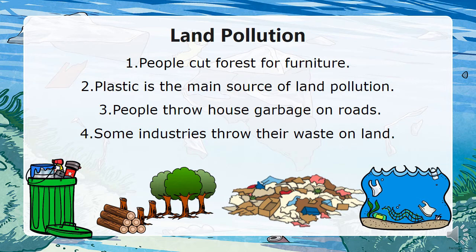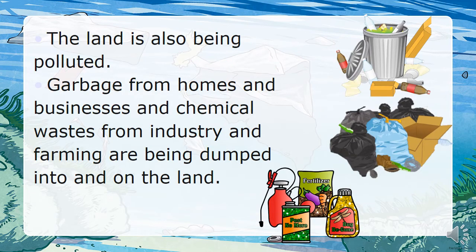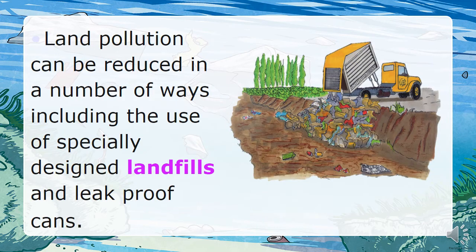Land pollution is another concern. People cut forests for furniture, and plastic is a main source of land pollution. People throw household garbage on land and roads, and some industries throw their waste on land. Garbage from homes and businesses, as well as chemical waste from industry and farming, are being dumped onto the land. Land pollution can be reduced through the use of specially designed landfills and leak-proof cans.